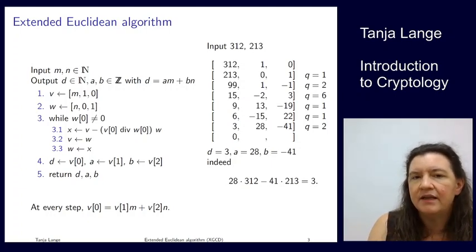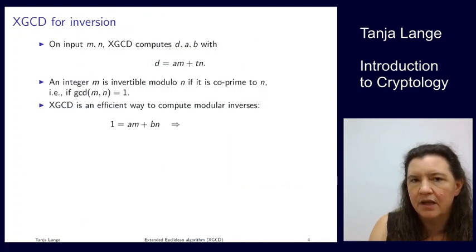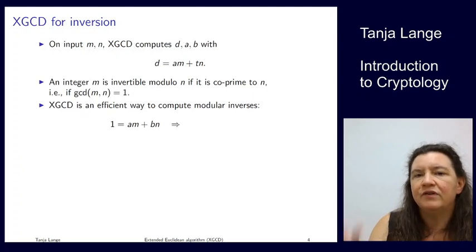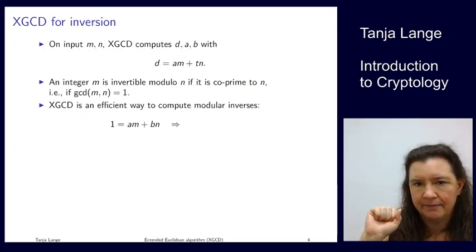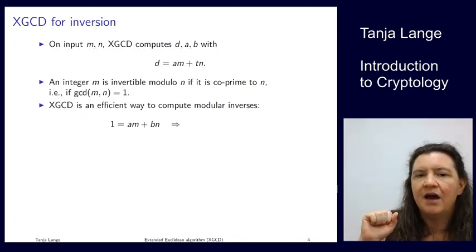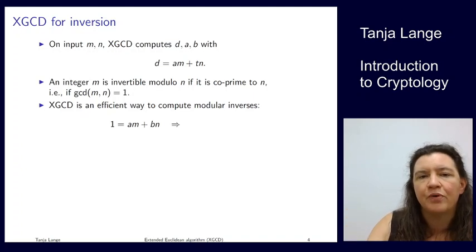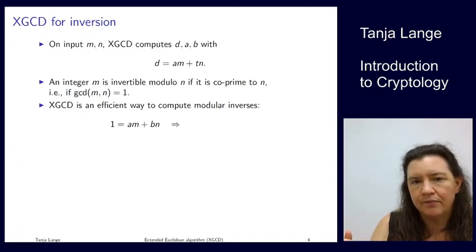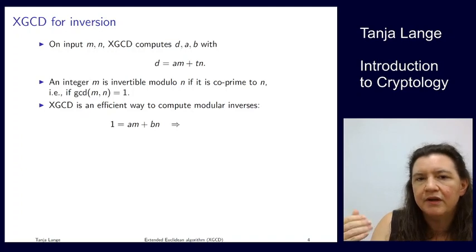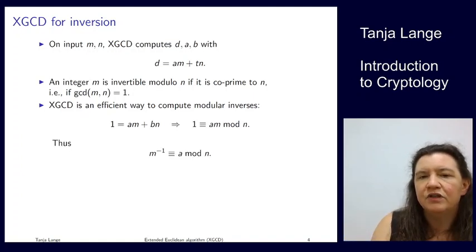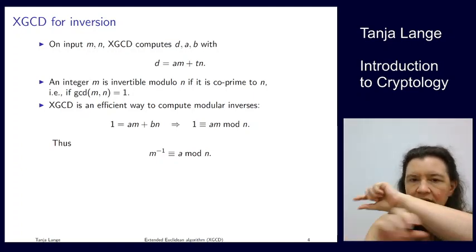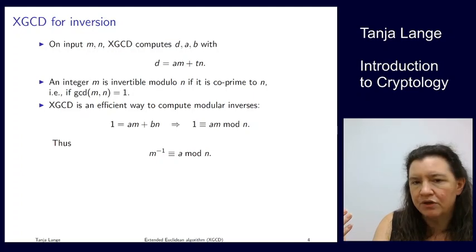The reason this algorithm matters is that it's a very common algorithm if you want to compute modular inversions. So let's take a look again at what this equation is saying here. We have d is equal to am plus bn. So there's a typo on the slide, it should be bn. Now the definition of integer being invertible modulo n is that it's co-prime to n. So m is invertible modulo n if and only if the GCD is 1. So if I look at this number, if the d is 1, and if I look at this equation 1 is equal to am plus bn, then I'm getting, if I compute this mod n, the bn disappears because n is 0, and I'm left with that 1 is congruent to a times m mod n. Or rearranging the order, I get that the inverse of m mod n is a.